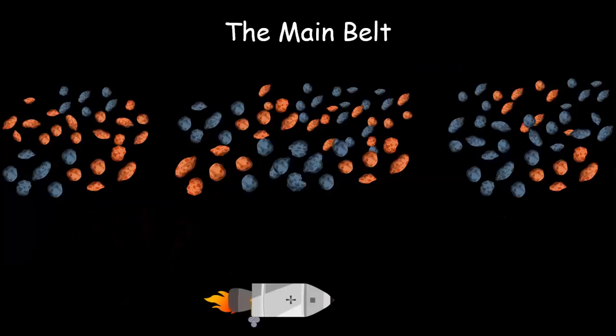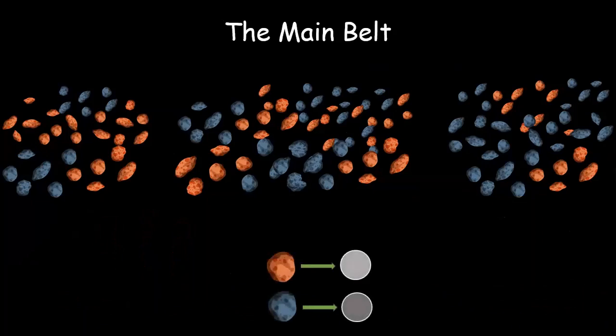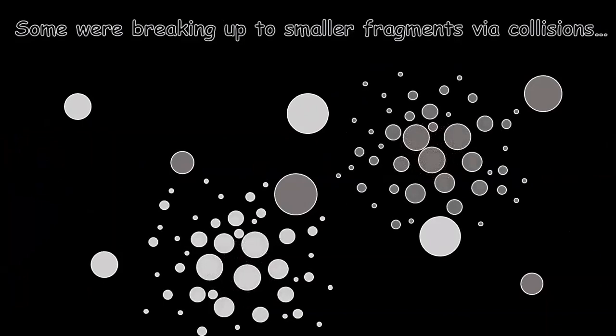Let's consider the asteroids as large dots, the bright ones from the inner solar system and the dark ones coming from the outer solar system. During the first stages of our solar system, the planetesimals from different regions were mixing. Some of them were breaking up into small fragments via collisions. The fragments may cause new collisions and so on.